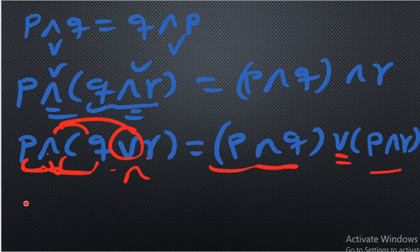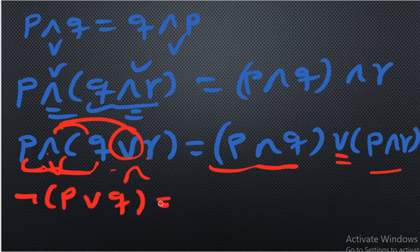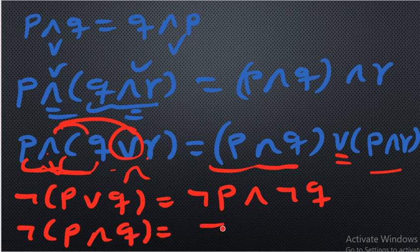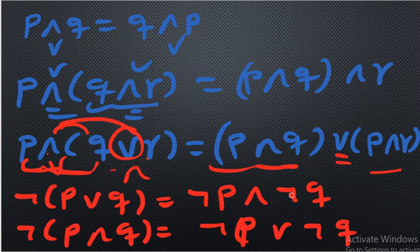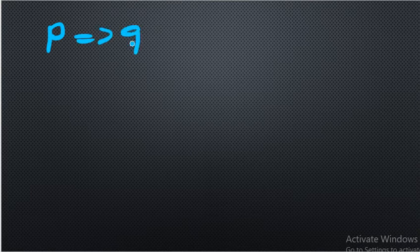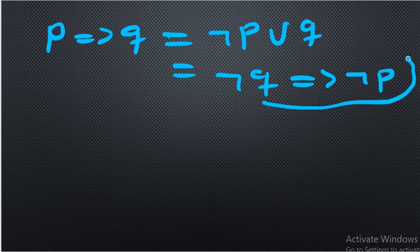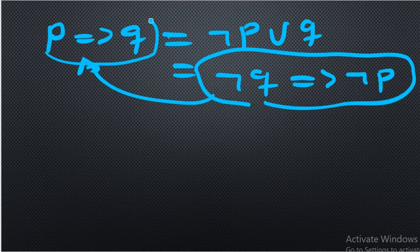Another main rule to remember is De Morgan's rule: negation of (p or q) is the same as (negation p) and (negation q) — the OR changes to AND when the negation is distributed. And negation of (p and q) is (negation p) or (negation q). There are also other critical rules: p implies q can be written as (negation p) or q, and is the same as its contrapositive: (negation q) implies (negation p).